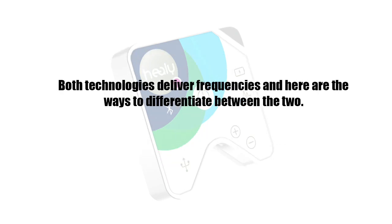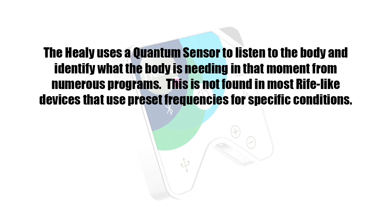Both technologies deliver frequencies and here are the ways to differentiate between the two. The Healy uses a quantum sensor to listen to the body and identify what the body is needing in that moment from numerous programs. This is not found in most Rife-like devices that use preset frequencies for specific conditions.